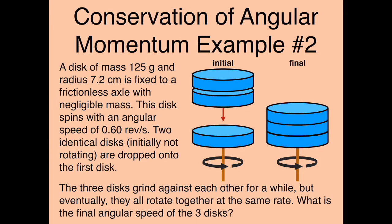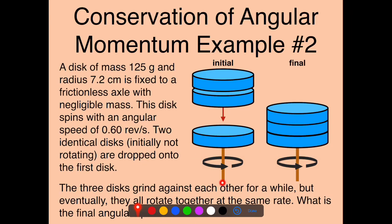Here we have a disc with a mass of 125 grams and a radius of 7.2 centimeters, which is fixed to a frictionless axle with negligible mass. The disc spins with an angular speed of 0.6 revolutions per second.